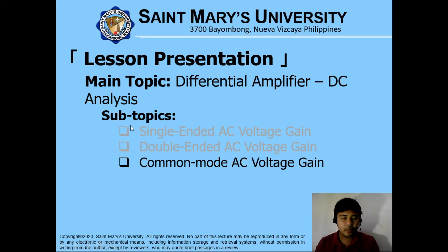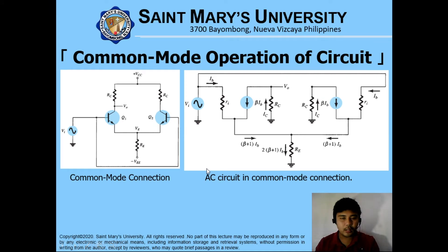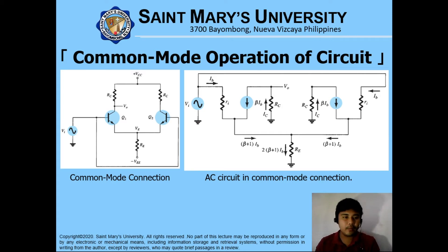For our last subtopic, which is common mode AC voltage gain: the AC circuit in common mode connection is shown on the right side. As you can observe, we have two inputs on the two transistors. However, they have the same phase. In comparison with the double-ended differential amplifier, the input supply has different phases for both transistors. In common mode, we have the same phase.